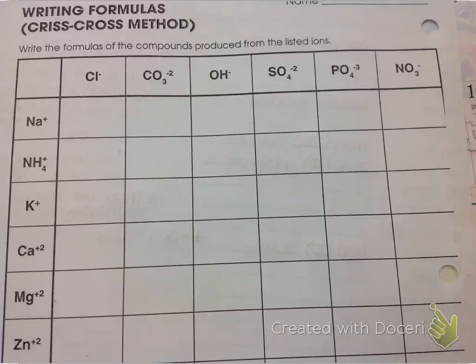For the problems on the back of the worksheet, instead of writing the names, we're going to write the formulas. So say we're given this first box here, we have Na+ and over here we have Cl-.